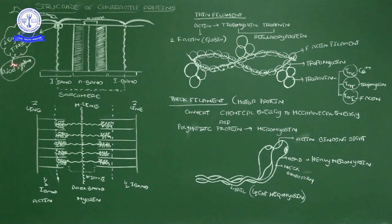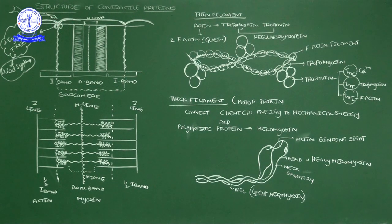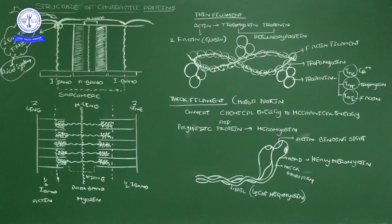During muscle contraction, signals are given by the central nervous system. Those signals travel via neurons and reach the muscle fiber. Muscle fibers are covered by a plasma membrane — we call it the sarcolemma. Sarco indicates muscle. On the surface of the sarcolemma, neurons release signals in the form of chemical substances called neurotransmitters.